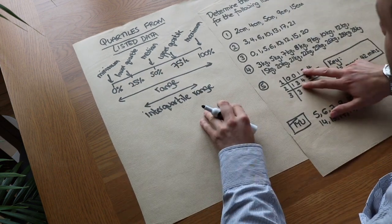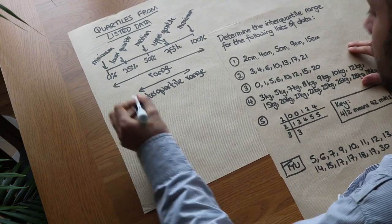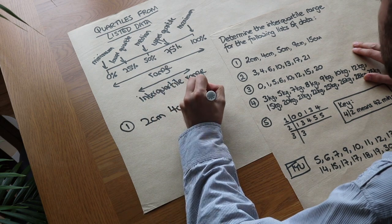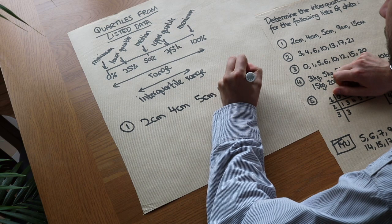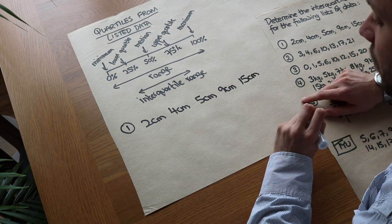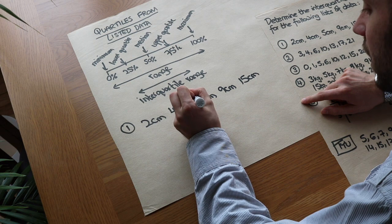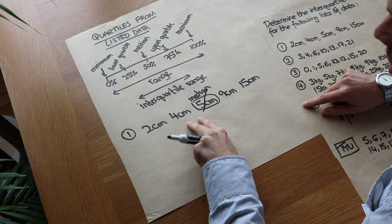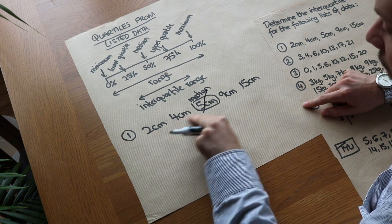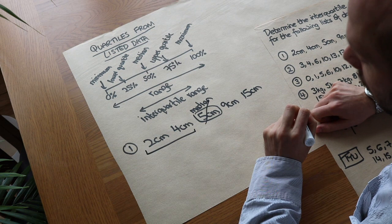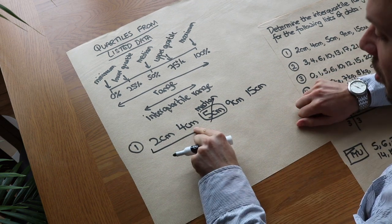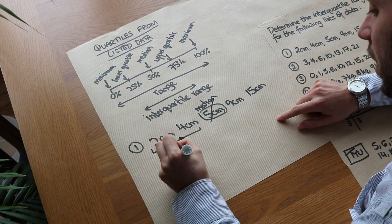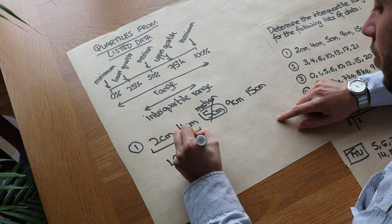Now, how do we find these values given listed data? Let's take this example: 2 cm, 4 cm, 5 cm, 9 cm, and 15 cm. To find the median, we take the middle one — so 5 cm is the median. Now, imagine crossing that out. In the remaining values below that, we find the median of the bottom half. What's the median of 2 and 4? There's no middle value, so we take halfway between them. The lower quartile would be halfway between 2 and 4, which is 3 cm.